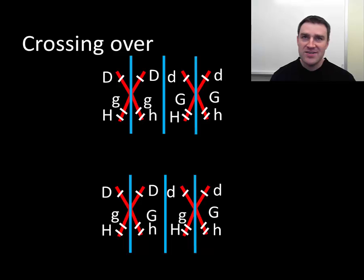So independent assortment and crossing over are separate processes. So if both of them create variety, then we're left with gametes that really can have all kinds of different ways of passing on half of your genetics.